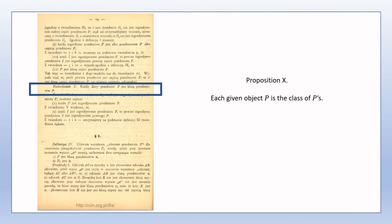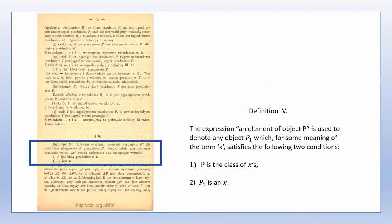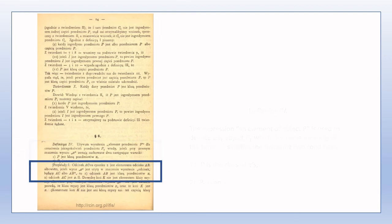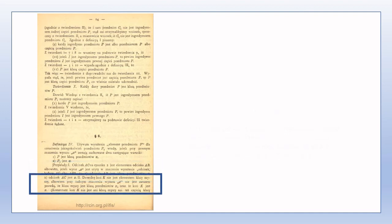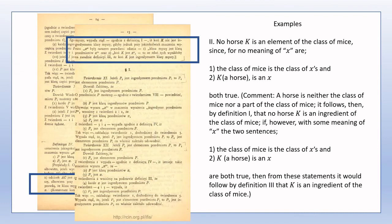Section 6 gives a name to the relation of the Ms in an aggregate of Ms to the aggregate. An object P can be considered as the class of x's for different meanings of x, but nevertheless the object P is always the same object. Therefore, notice that in Definition 4 we're able to say that P1 is an element of P without reference to what type of thing P1 is.